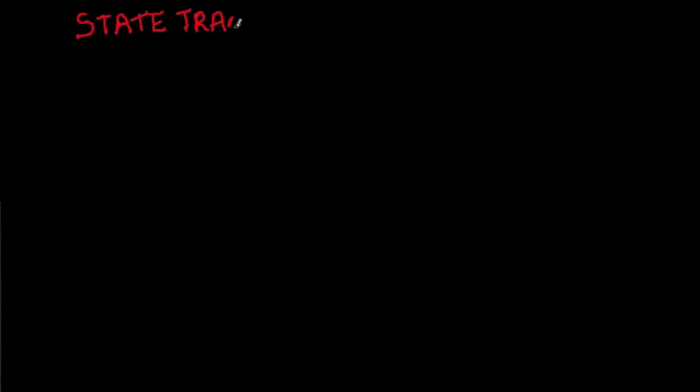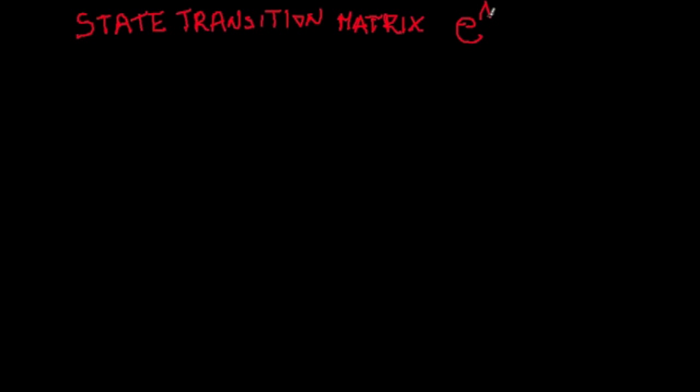Hello everyone. In this lecture I will explain the notion of the state transition matrix. The state transition matrix is given as a matrix exponential, e to the power A·t, and we denote this matrix exponential as phi. Let us first find out where this notion is coming from.